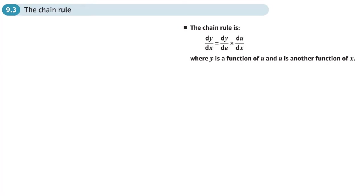Here you can see that we've actually treated dy/dx like a fraction. We said dy/dx is equal to dy/du times du/dx. Now, if you multiply those together, the du's would cancel out, and you would get dy/dx.